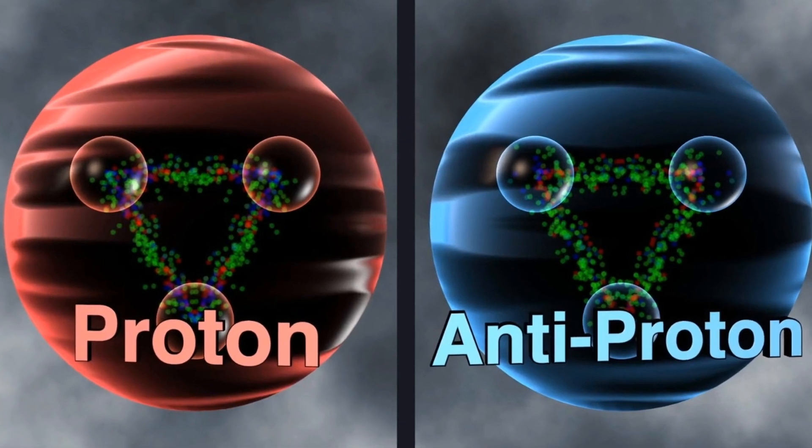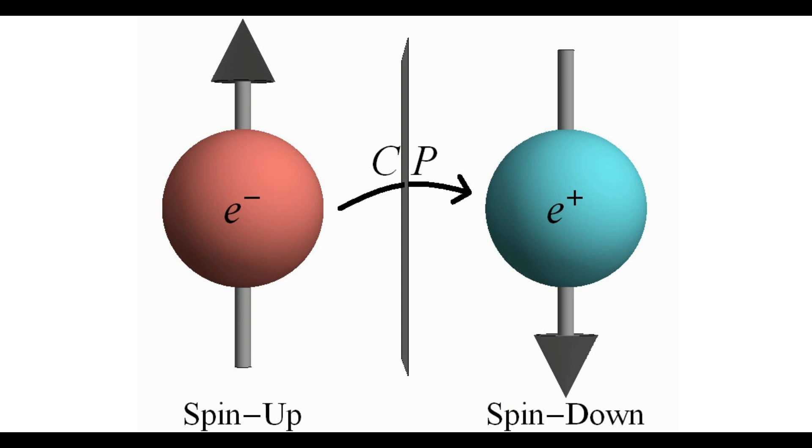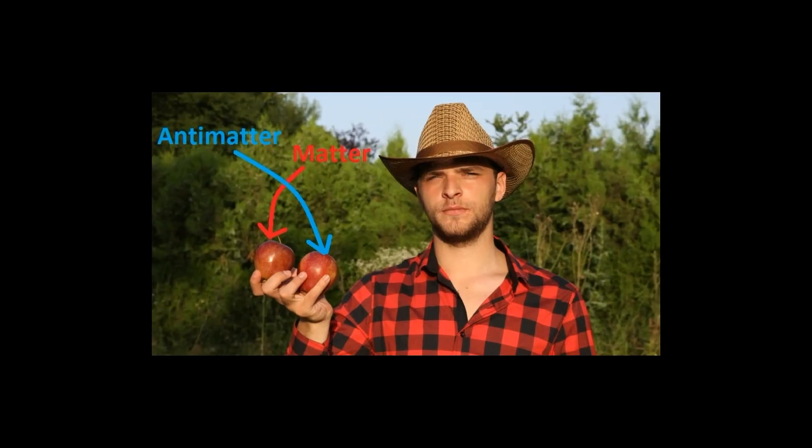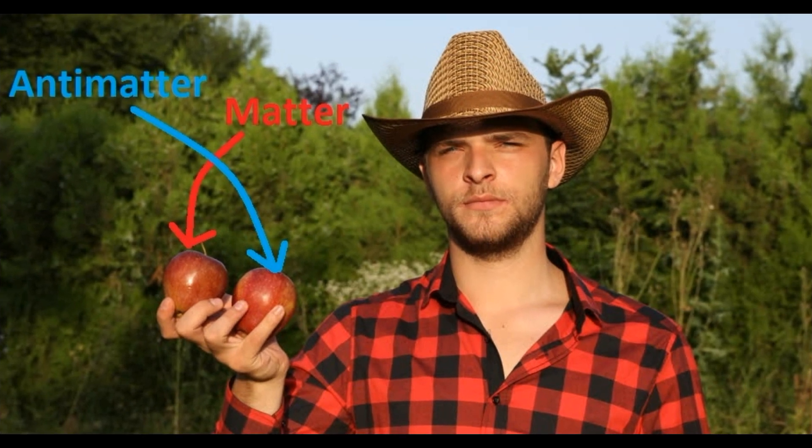Just like a proton is a positively charged particle, its counterpart, the antiproton, is a negatively charged particle. Just like an electron is a negatively charged particle, its counterpart, the anti-electron or positron, is a positively charged particle. All other properties like mass, spin, and even appearance of the antiproton and anti-electrons are just the same.